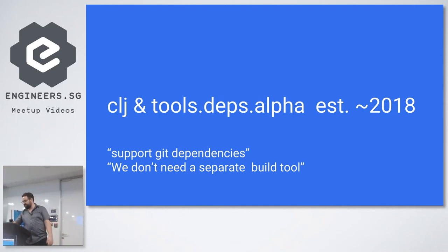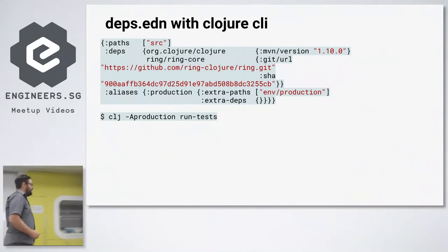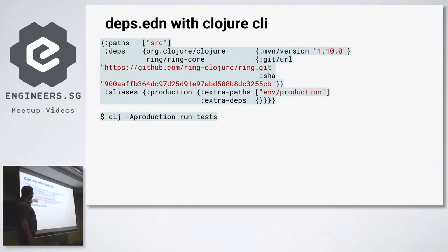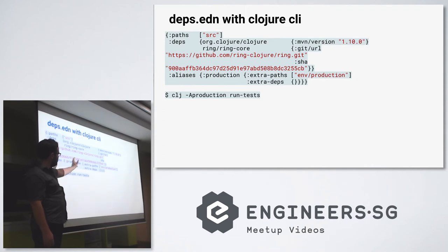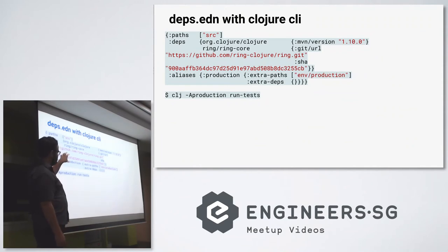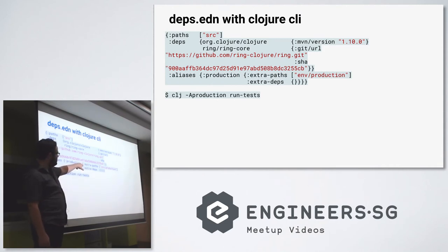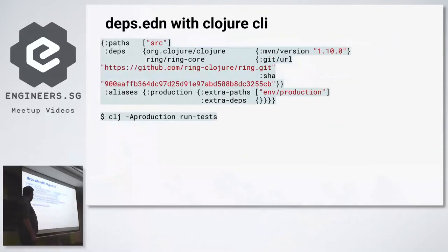It looks like this — we're back to declarative again, like Leiningen. It's just an EDN file called deps.edn where you put your paths and deps. The format is slightly different — a map of maps instead of a vector of vectors — because you need to specify whether it's a Maven version, a Git URL, or something else. But it has essentially the same information as always. You can also have aliases for different environments — production, dev, CI — with extra paths or extra dependencies on the classpath, which is very convenient for testing and deployment stages.